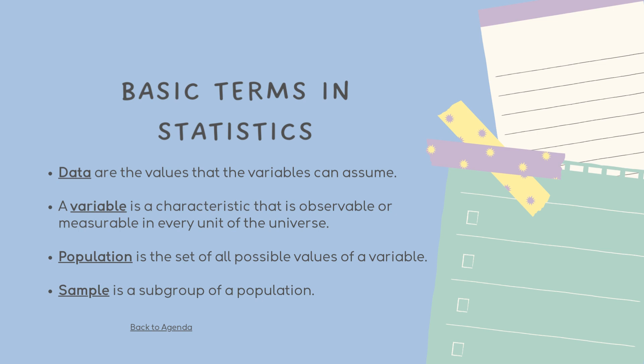Lastly is the sample. A sample is a subgroup of a population. A sample is a smaller, more manageable subset of a larger group. It is a subset of a broader population with similar traits. When population sizes are too big for the test to include all possible members of observations, samples are employed. A sample should be representative of the population as a whole and should not be biased toward any attribute.